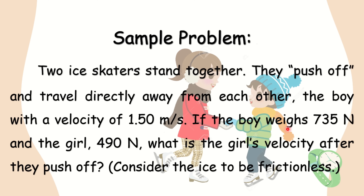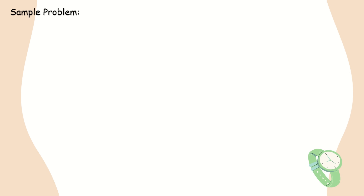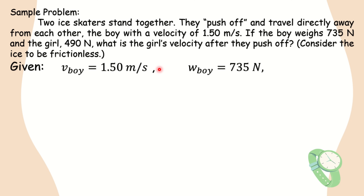Now let's have a sample problem. Two ice skaters stand together and push off, traveling directly away from each other. The boy moves with a velocity of 1.50 meters per second. If the boy weighs 745 Newtons and the girl 490 Newtons, what is the girl's velocity after they push off? Consider the ice to be frictionless. Let's solve. Initially they are at rest because they started standing together. After they push off, the velocity of the boy is 1.50 m/s, the weight of the boy is 735 N, and the weight of the girl is 490 N.